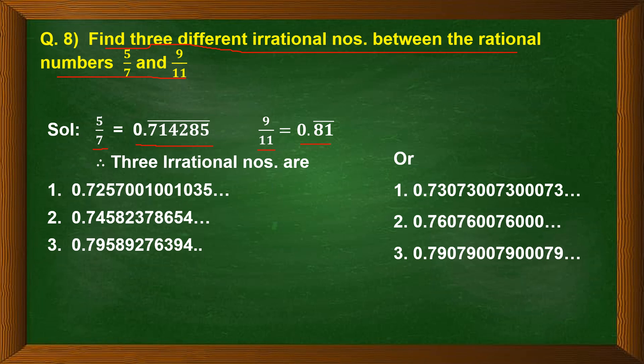So between 0.71 and 0.81, we can have three irrational numbers as 0.7257001001035 and so on, 0.74582378654, 0.79589276394 and so on.